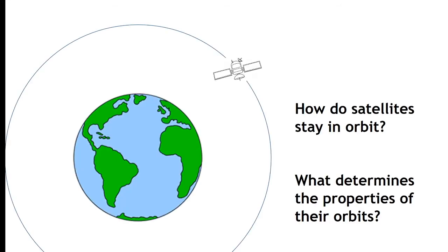Good day. We are going to talk about the motion of satellites. Here is an example of a satellite orbiting around Earth. We are going to primarily ask two questions: How do satellites stay in orbit? And what determines the properties of their orbits?